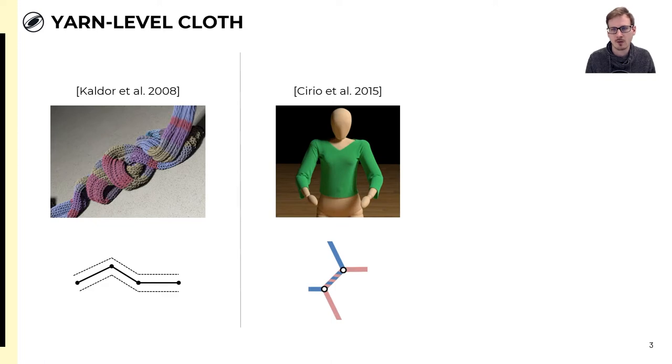Serio et al. proposed to model yarns with persistent contacts and mitigate the need for expensive collision detection between yarns. However, the degrees of freedom are overall on a similar order of magnitude, making simulation of entire garments still expensive.